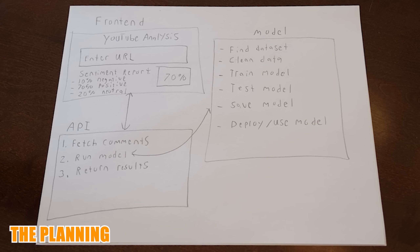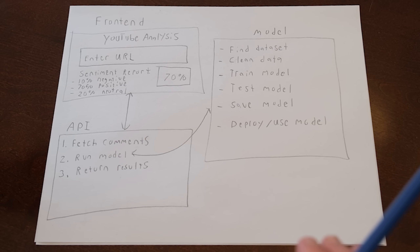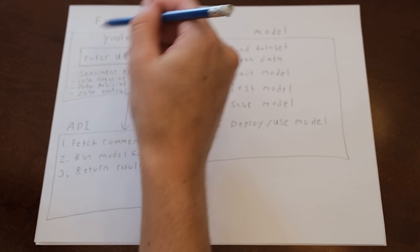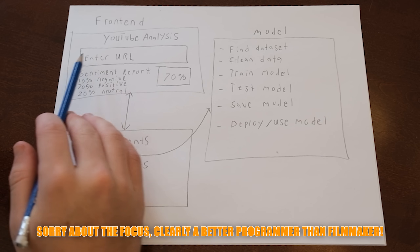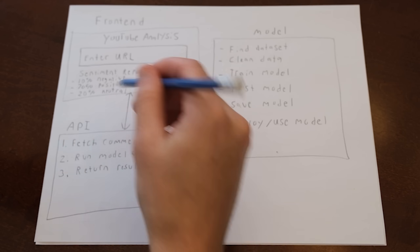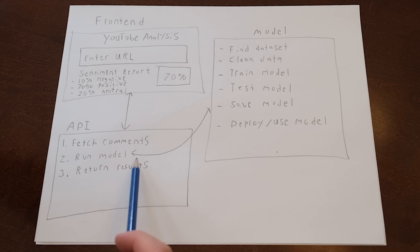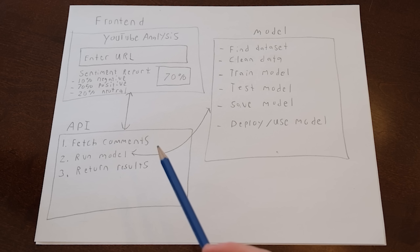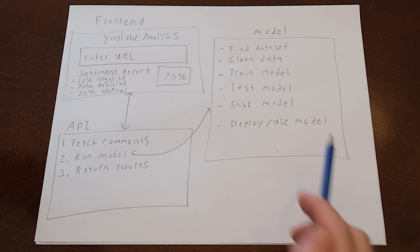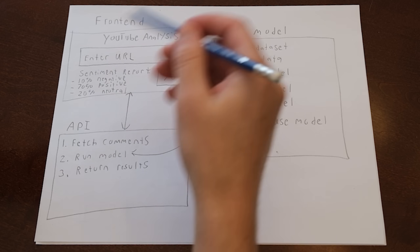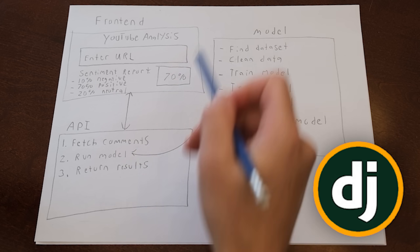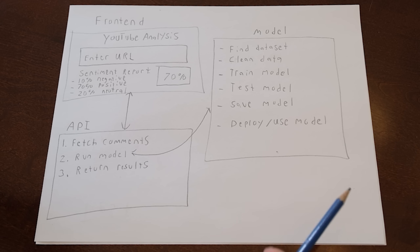Now let me show you how I'd plan that out. When I start a project, I'll do a quick mind map or diagram — just so I have a general sense of the parts I need. We have a frontend with a title, URL input, and a sentiment report showing percent negative, positive, neutral, etc. That connects to an API which fetches the comments from YouTube, runs the model on those comments, and returns formatted results. For the model, I need to find a dataset, clean the data, train, test, save, and deploy it. Three parts: model, API, frontend. I'm going to use Django and TensorFlow.